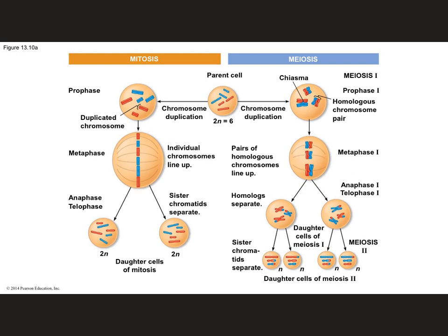These four cells all look very different from one another because of crossing over and because in meiosis one, homologous chromosomes separate, while in meiosis two, sister chromatids separate. So there are many points where variability is introduced. Meiosis results in the formation of gametes — sex cells, meaning egg or sperm — while mitosis results in the formation of somatic cells such as skin cells or stomach cells.